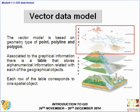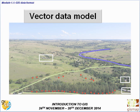The vector data model is based on geometry types of point, polyline and polygon. Associated with each geographic object, there is a table storing alphanumeric information related to each of those objects, and each row of the table corresponds to one single spatial object. As a vector data model, we can represent everything in the world — a field, a river, a road, some trees — and each of them can be represented as polygon, line or point.